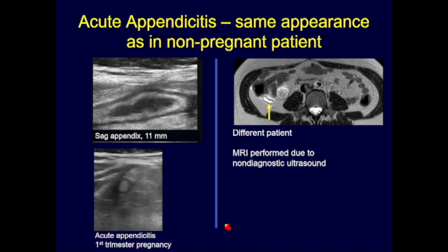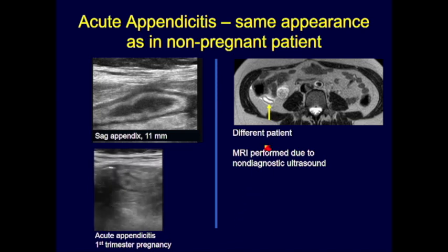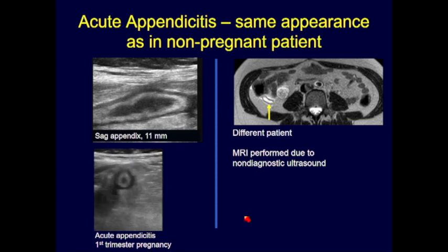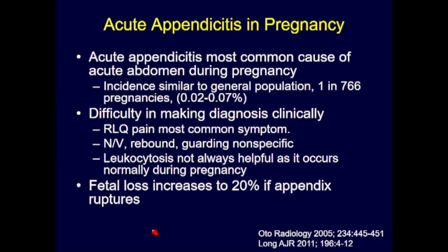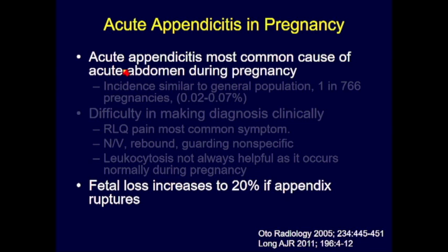A different patient had a non-diagnostic ultrasound; MRI showed a fluid-filled appendix with inflammation on axial T2-weighted imaging. MRI is used at our institution for problem-solving when the appendix cannot be found on ultrasound. Technique is difficult in the third trimester — LPO or left lateral decubitus positioning should be attempted, as well as the transvaginal approach. Fetal loss can occur in up to 20% of cases if the appendix ruptures, making early diagnosis critical.